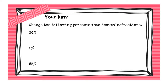Now it's your turn. On the first one, I asked you to write both the fraction and the decimal. So for 24%, you should have had 24 out of 100, and you should have also written it as 24 hundredths.